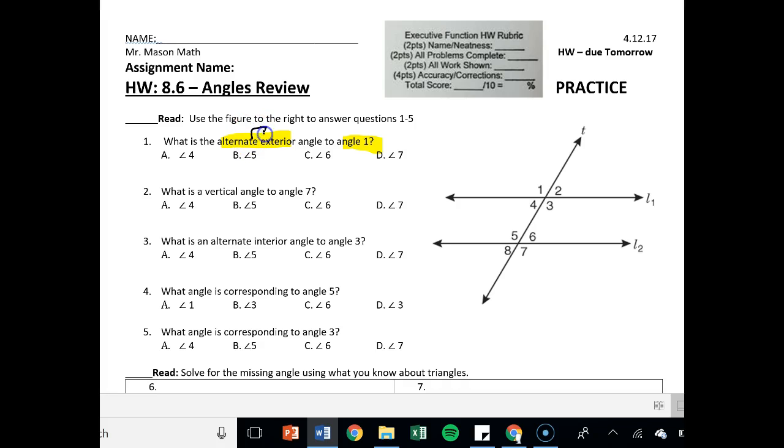I'm going to throw in what I think the definition of alternate exterior is, which is both outside and opposite. That way I'm not just guessing and thinking. So I'm going to look at one and what's the other one that's outside and opposite. That's angle seven. So one and seven. So D is my answer.